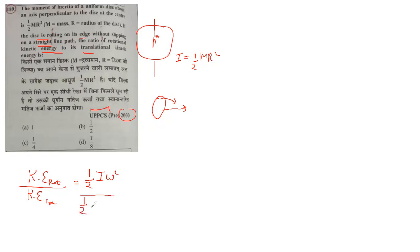The translational formula is half m v squared. We can change omega to v over r. So the ratio becomes I omega squared over m v squared, which simplifies to I over m r squared. Substituting I equals one-half m r squared, we get one-half.